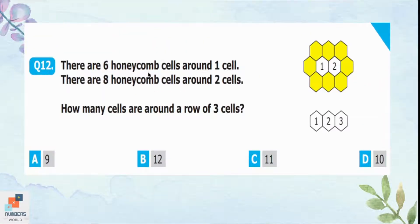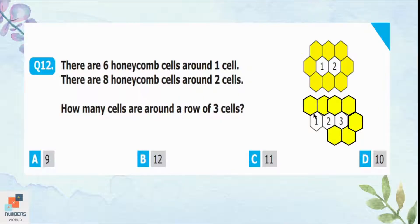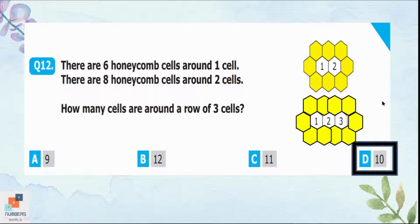Question 12: There are six honeycomb cells around one cell and eight honeycomb cells around two cells. How many cells are around a row of three cells? Drawing the honeycomb cells around three cells and counting them gives 1 through 10. So there are 10 honeycomb cells around three cells. Option D is correct.